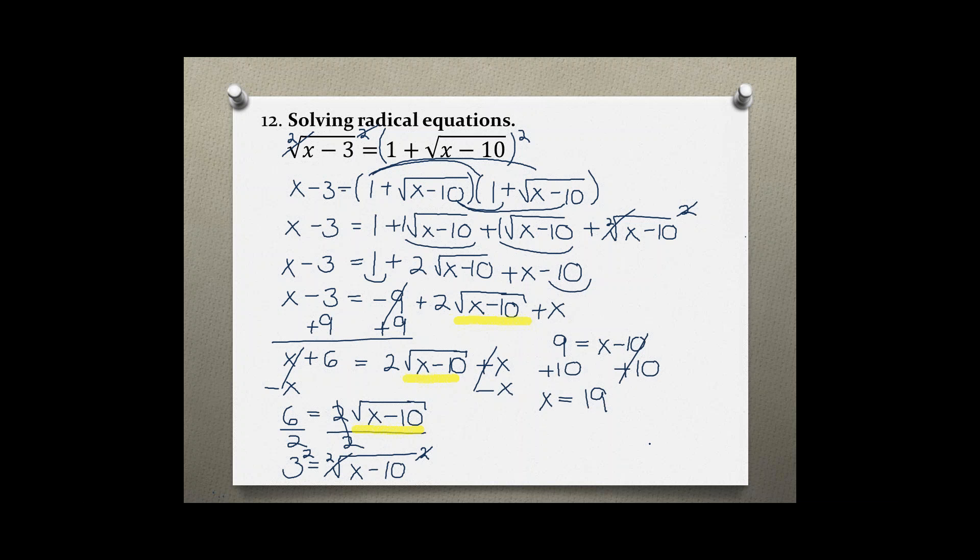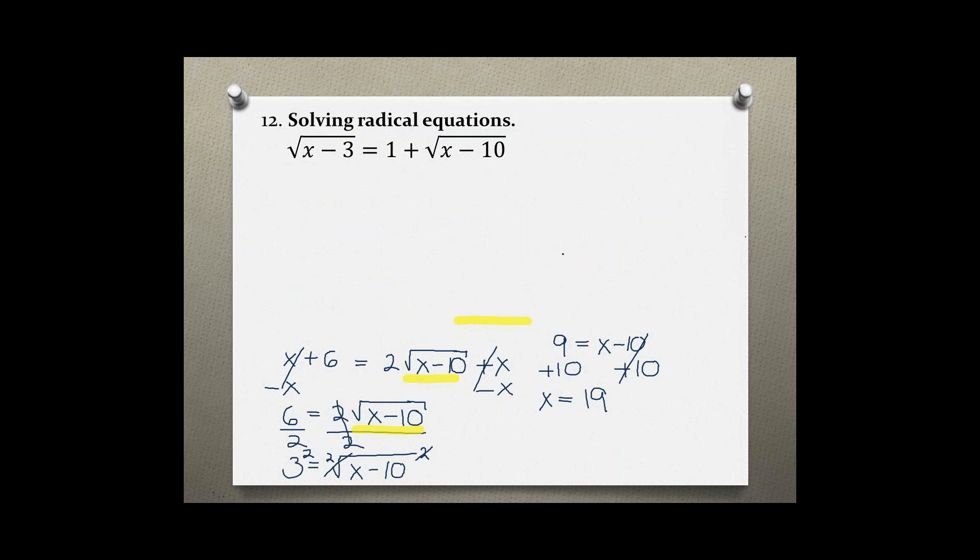Now, just to make sure we did a lot of work and that we do have the correct answer, we have to check that our solution gives us a true statement. So we are going to plug the 19 back into the original problem: √(19-3) = 1 + √(19-10).